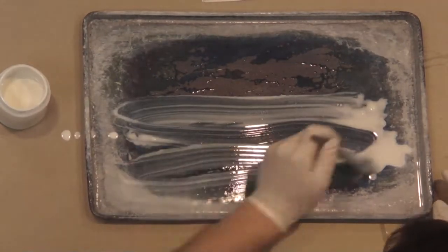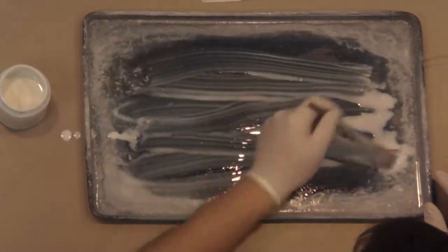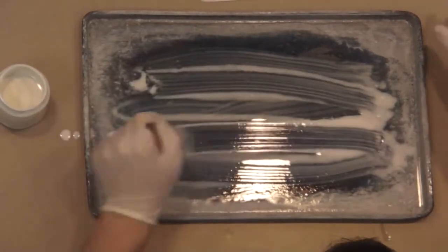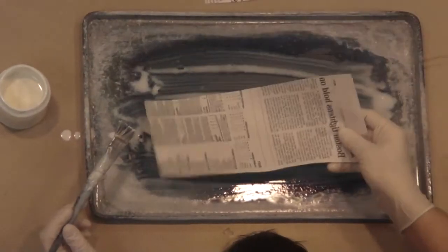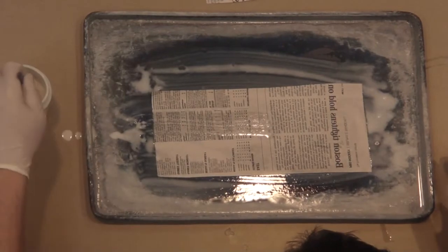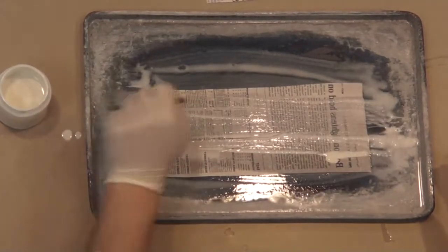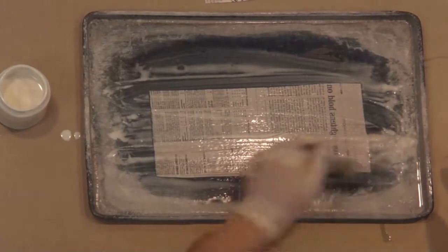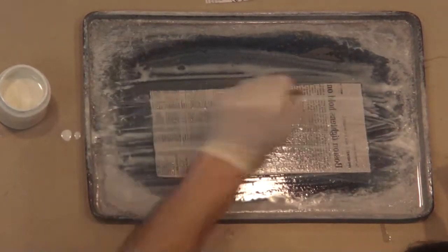Start by brushing a layer of makigami rolling solution onto your pan. Now put a sheet of newsprint on top of the liquid. Add more makigami rolling solution. Make sure you completely saturate the newsprint with the liquid.